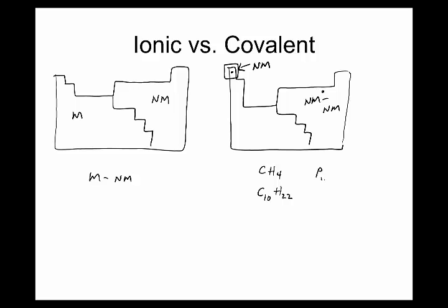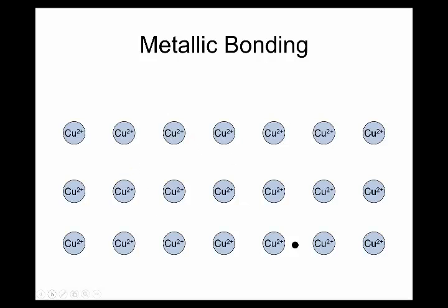Even something like phosphorus and oxygen — these are a bunch of nonmetals. You're going to see stuff like this, but we won't go into Lewis structures of more complicated things until a little bit later. We're going to stick to molecules that have like one central atom.